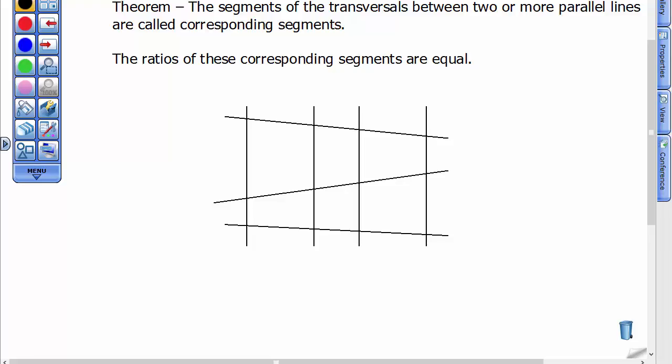This is going to be a real short segment about a theorem that involves the segments of the transversals between two or more parallel lines. First of all, I'm going to call this line 1, line 2, line 3, and line 4. And those are all parallel lines.